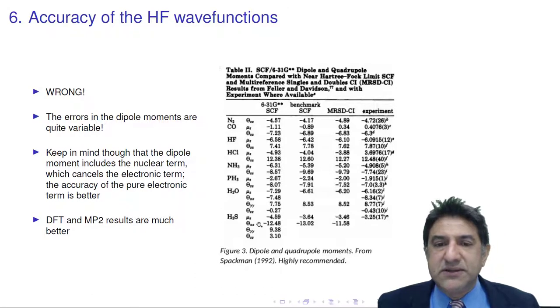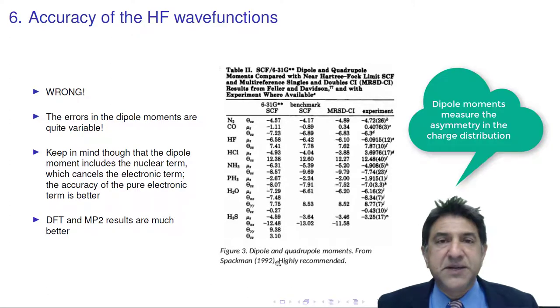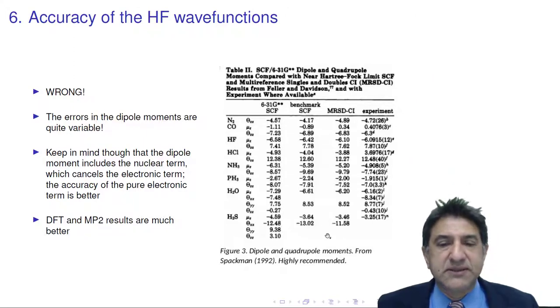Here is a table of dipole moments labelled by mu and quadrupole moments taken from a paper by Mark Spackmann, who's recently retired from our department. This is an excellent paper. Have a look at it. But we can look at, say, carbon monoxide here, using a certain set of... This is the Hartree-Fock approximation, sometimes called SCF or Hartree-Fock. Hartree-Fock, it has prediction of minus 1.11 debye.